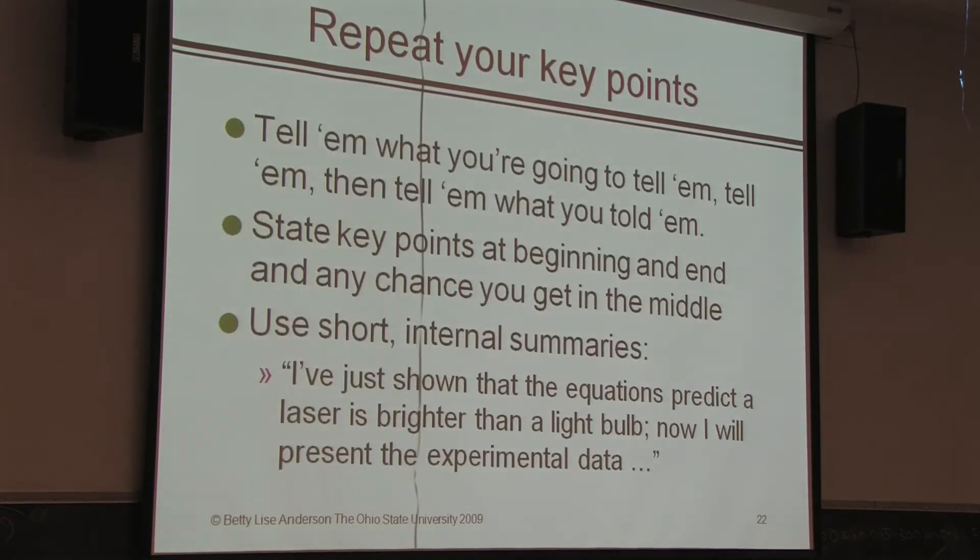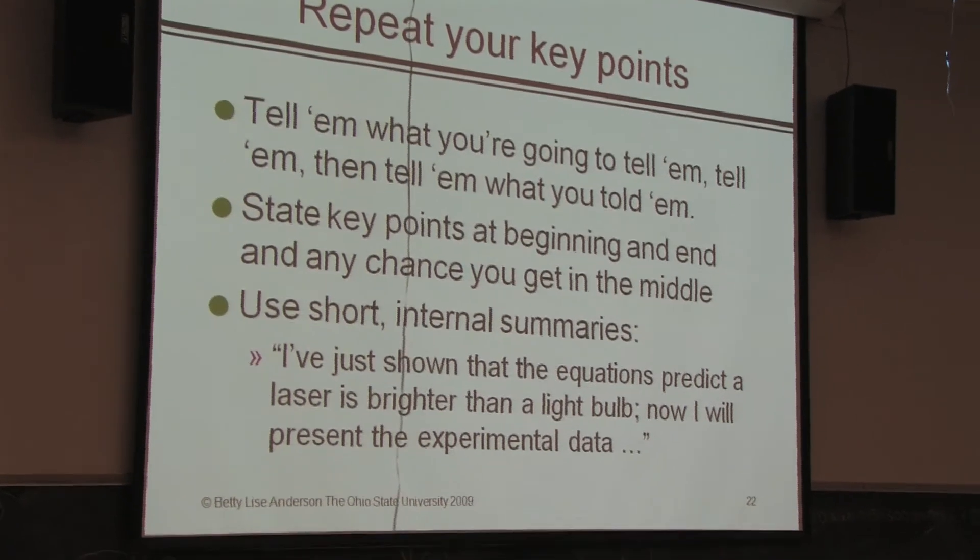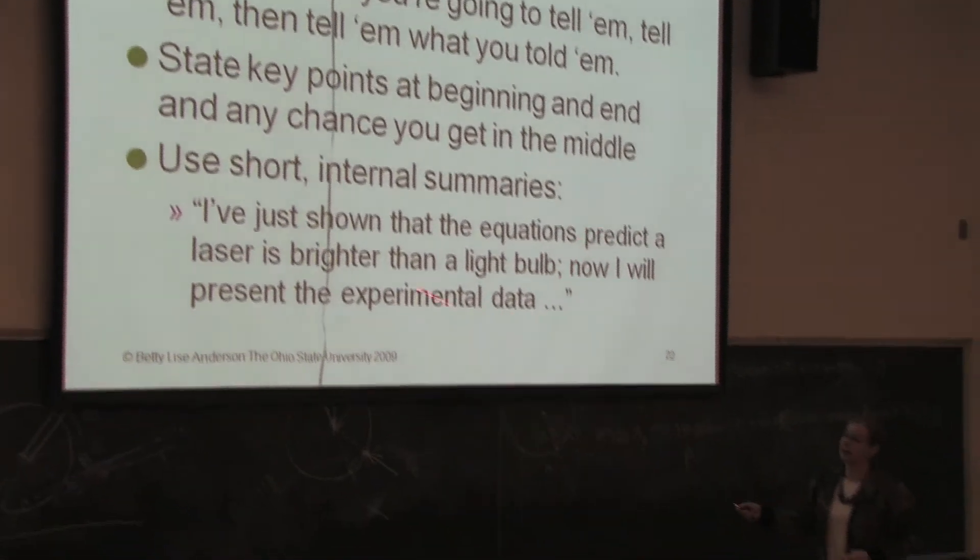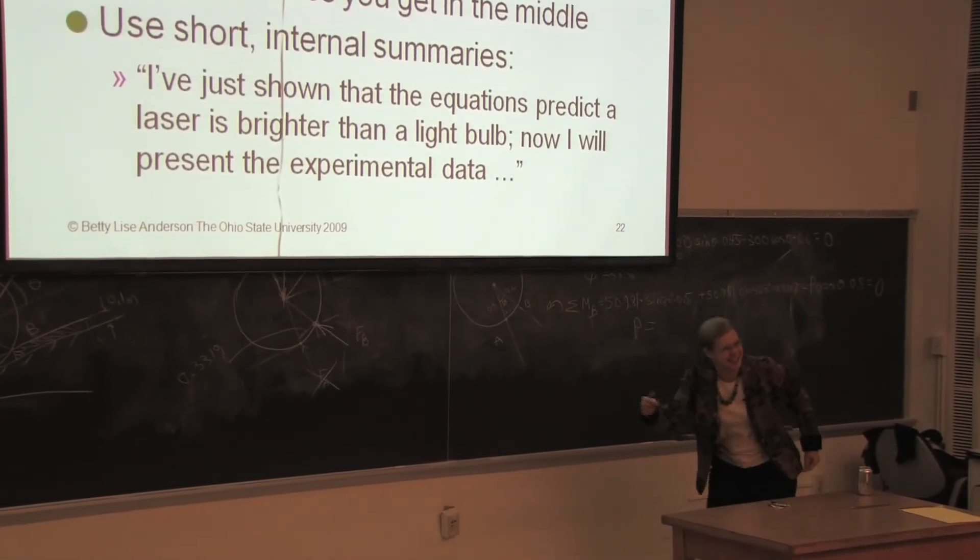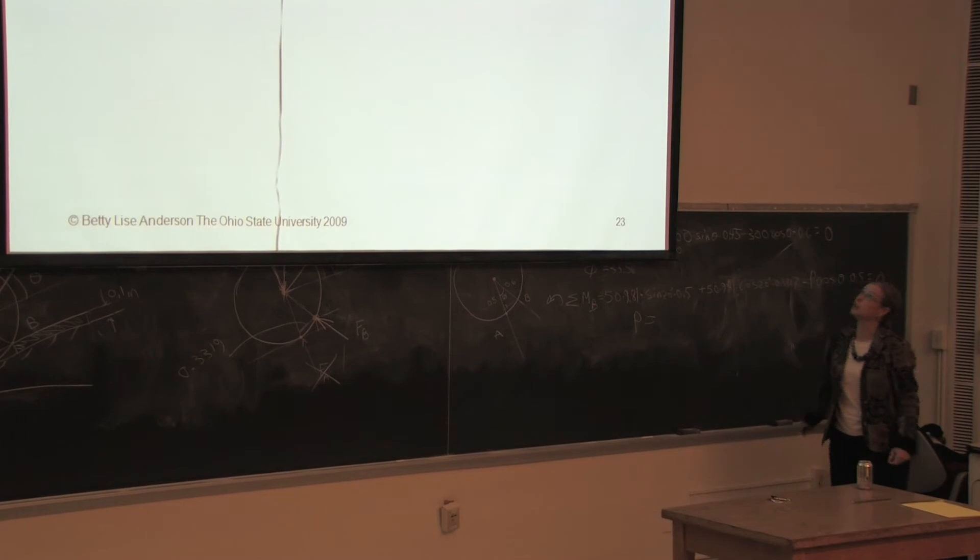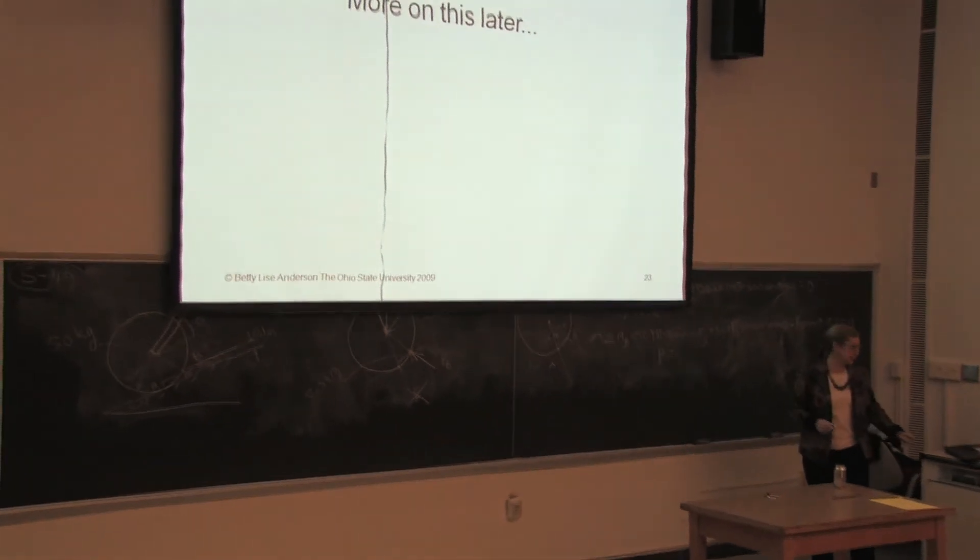Now be sure to repeat your key points. You know what they say. Tell them what you're going to tell them, that would be in your title and the organization. Then tell them. And then tell them what you told them, that's your conclusion slide. State your key points as often as you can weasel it in, and use short internal summaries. This is a great way to make a transition and repeat your key points. I've just shown that equations predict that a laser is brighter than a light bulb. Now I'll present experimental data. Well I'll get a chance to say that again. That's the only thing to remember. And we'll talk about your visuals later.